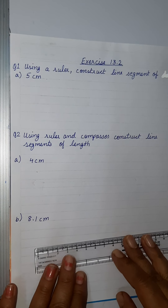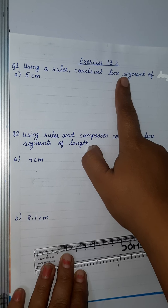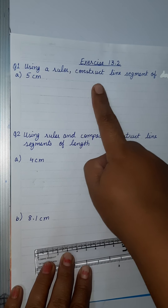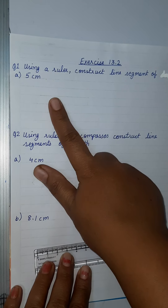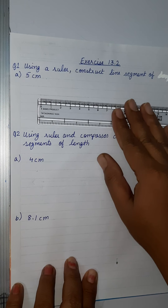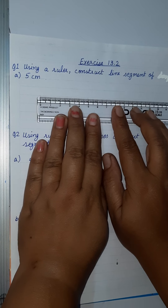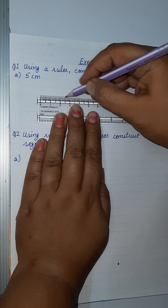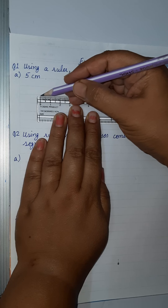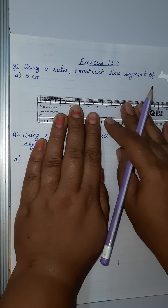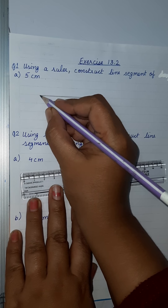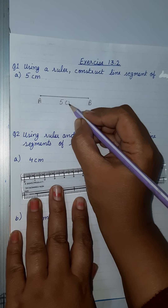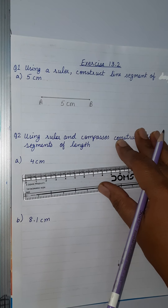Good morning children. Today we are starting exercise 13.2, which is based on construction of line segments. First question: using a ruler, construct a line segment of 5 centimeters. Starting from 0, we draw a line segment to 5, then mark it as point A and point B. This is the line segment of measurement 5 centimeters using a scale.